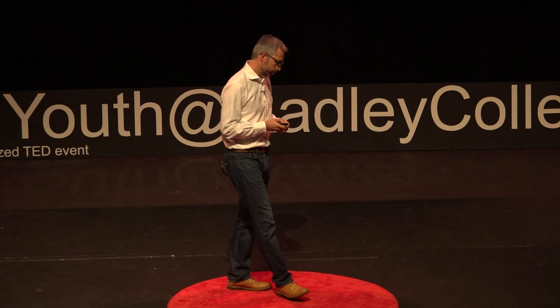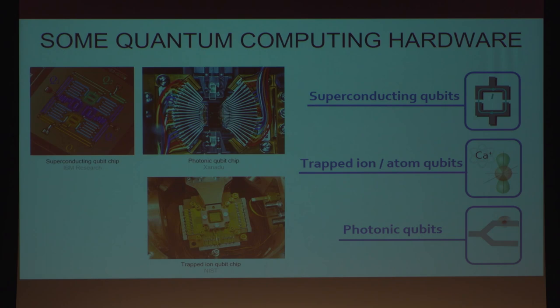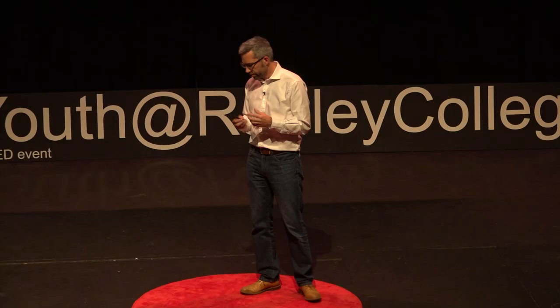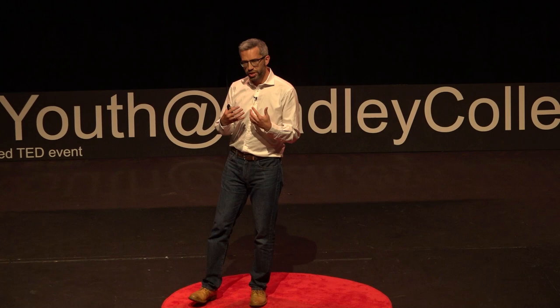Each of these different technologies could probably, with some development, create one of these application-specific computers. But we don't yet know which, if any of these, will be capable of making a million-qubit quantum computer. And this raises a really interesting question. There's no doubt that quantum computing represents a revolution in our ability to compute, and quantum information is completely different to any information that has come before. But is that necessarily going to be accompanied by another revolution in computing hardware — from gears to vacuum tubes to silicon? Or is it possible that the silicon chip that exists today can somehow evolve to become a quantum computer?